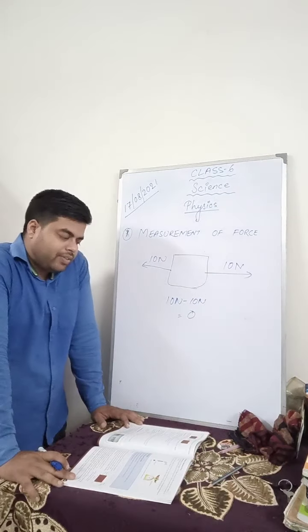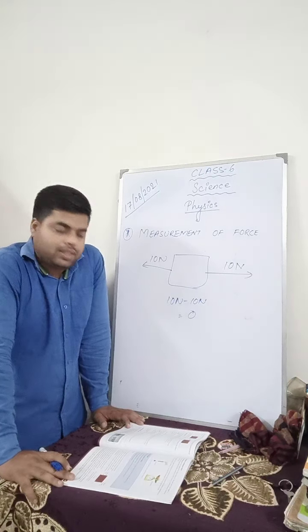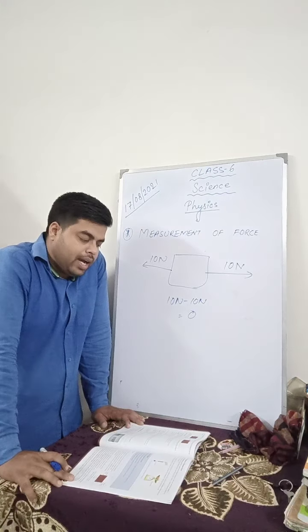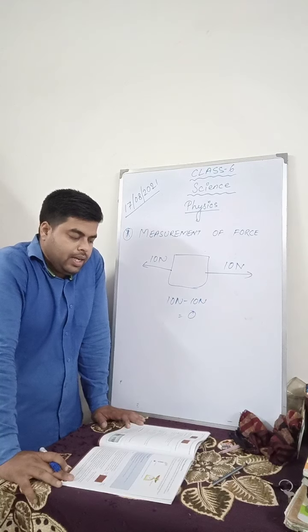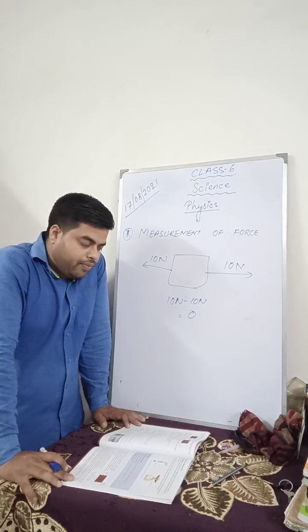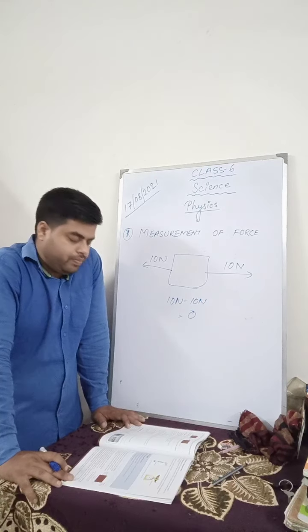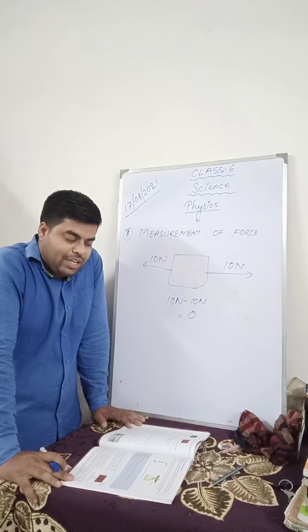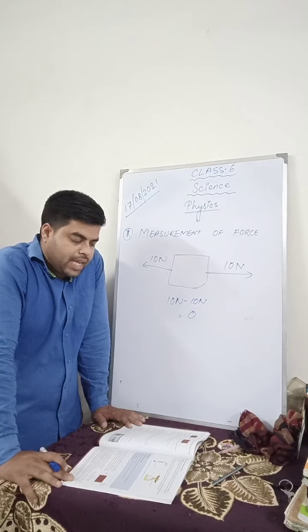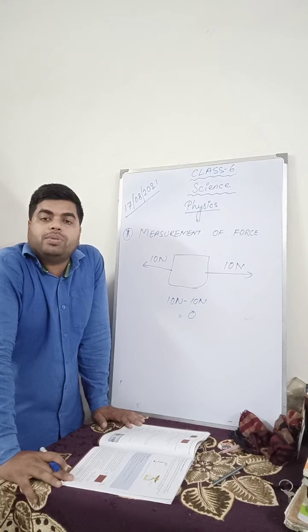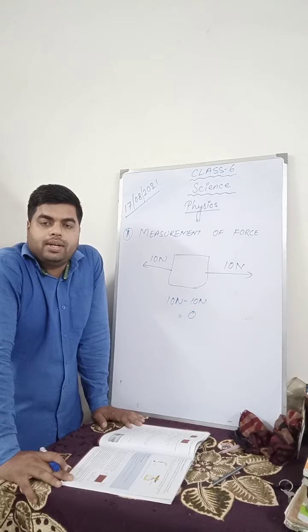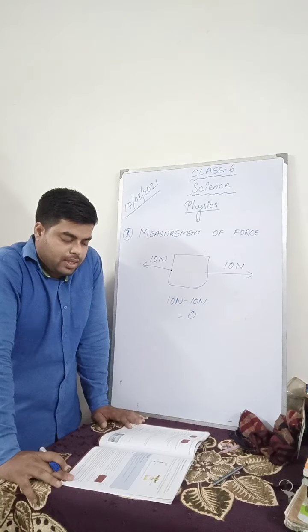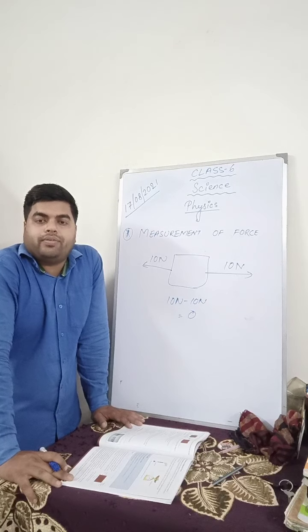If two forces have the same magnitude and act in opposite directions, then the resultant force is always zero. For example, 10 Newton minus 10 Newton equals zero. This is equivalent to no force acting on the object, and the object will remain stationary — it will not move at all.